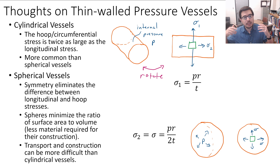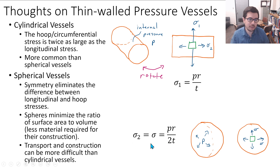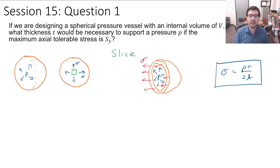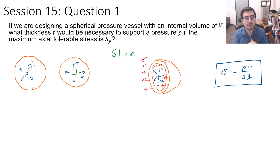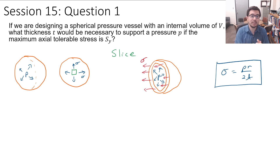These three equations are enough to start doing some degree of design on pressure vessels. The first example asks: if you are designing a spherical pressure vessel with an internal volume V, what thickness T would be necessary to support a pressure P if the maximum tolerable stress is some yield strength? This gives us an opportunity to apply these formulas practically.